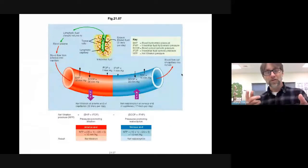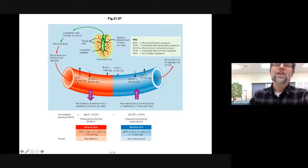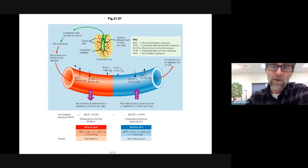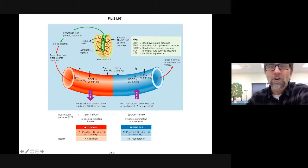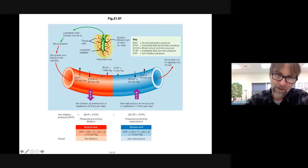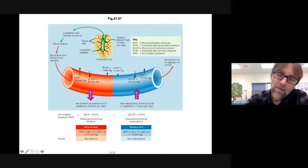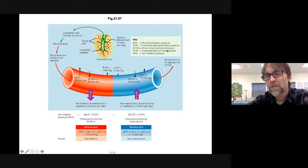There are two pressures here. Blood hydrostatic pressure (BHP) — that's your blood pressure — is the push factor driving fluid out. Interstitial fluid osmotic pressure is the pull factor, meaning there's more albumin in the interstitial fluid drawing water out. On the reabsorption side, blood colloid osmotic pressure (BCOP) means there's more albumin in the blood, which sucks water back into the bloodstream.